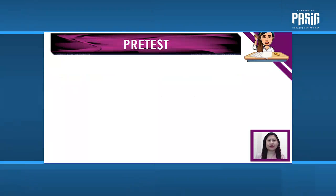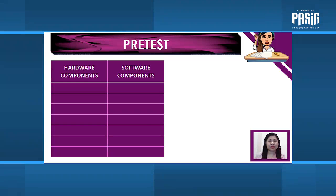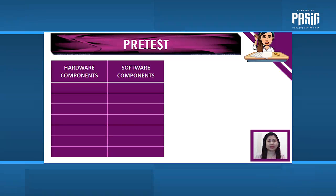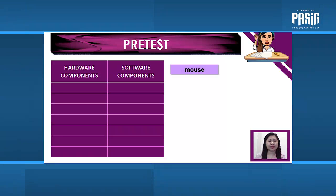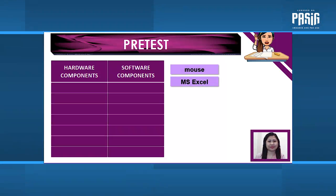Let's see if you have prior knowledge of our lesson today. On your paper, I want you to make two columns having the titles 'hardware components' and 'software components.' I am going to give you devices and you will write where each one should fall. Number 1: Mouse. Number 2: MS Excel. Number 3: MS Word.